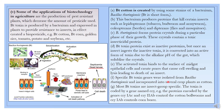Specific Bt toxin genes were isolated from Bacillus thuringiensis and incorporated into several crop plants such as cotton. Most Bt toxins are insect-group specific. The toxin is coded by a gene called CRY. The proteins encoded by the gene CRY 1AC and CRY 2AB control the cotton bollworms, and CRY 1AB controls the corn borer. These are the different types of genes which are extracted from the bacteria and then passed into the corn plant or the cotton plant.